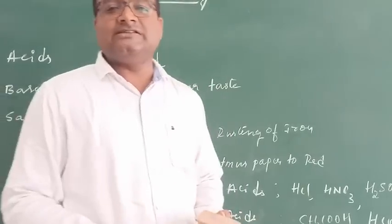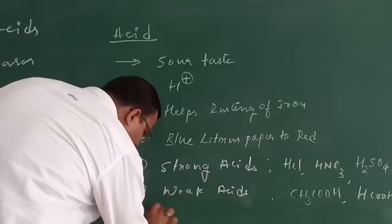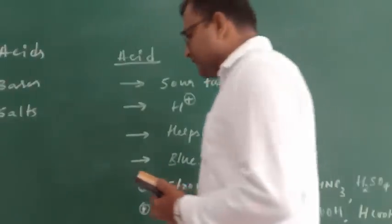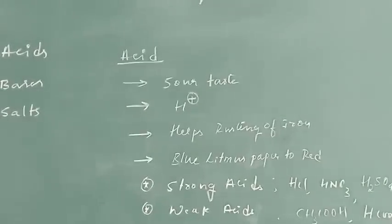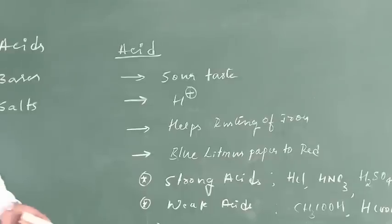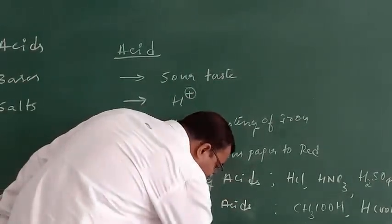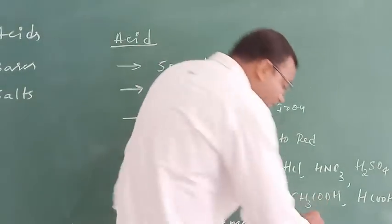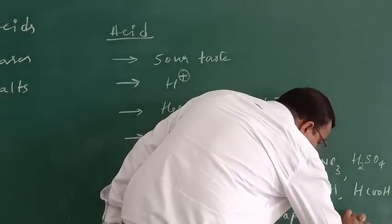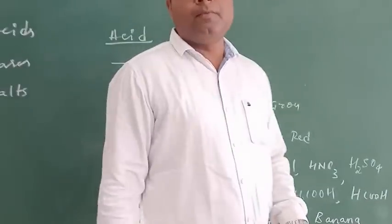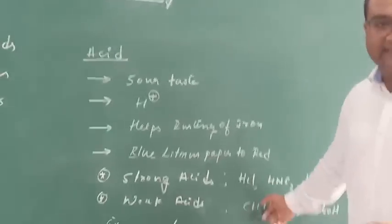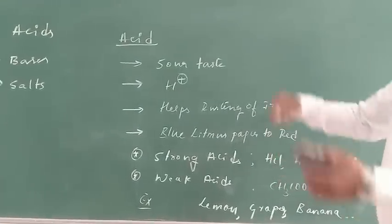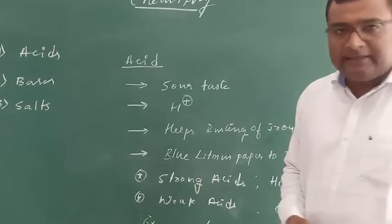A few everyday examples of acids: most fruits are acidic in nature. For example, acidic fruits include lemon, grapes, orange, and banana. Many more fruits are acidic in nature. So these are the examples for strong acids and weak acids. Now we will move on to bases.